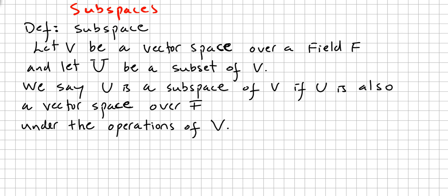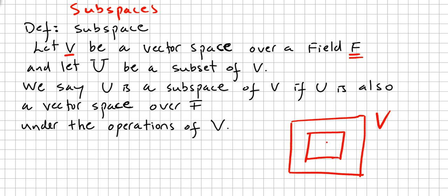Let V be a vector space over a field F, and U be a subset of V. We have V here, a vector space over a field F, and we have U here, a subset of V. We say U is a subspace of V if U is also a vector space over the same field F.